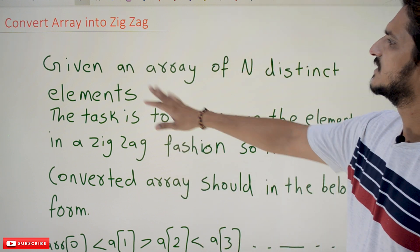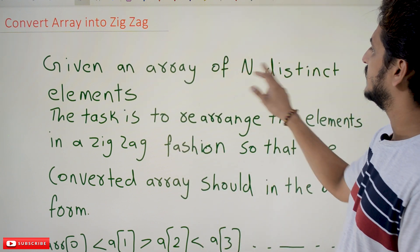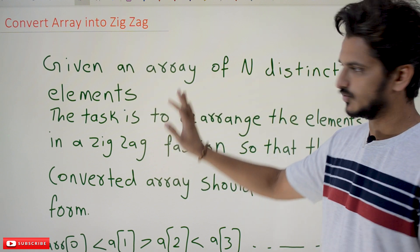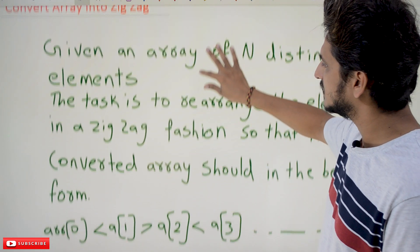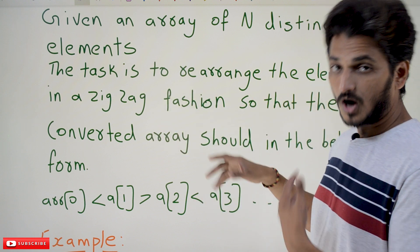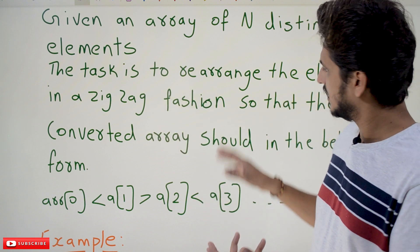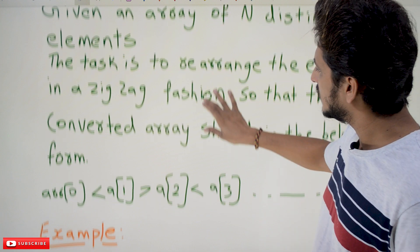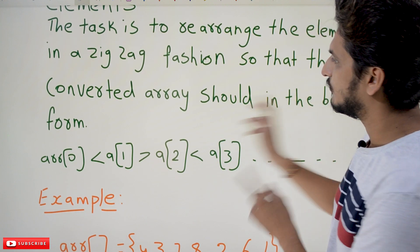it's a very simple example. Given an array of n distinct elements, they are going to give n distinct elements. The task is to rearrange the elements in a zigzag fashion.